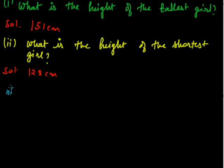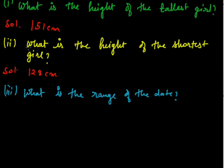Now the third part is what is the range of the data. So the range will be maximum observation minus the minimum observation. So maximum observation is 151 and minimum observation is 128. So the difference will be 23 centimeters. This is our range.